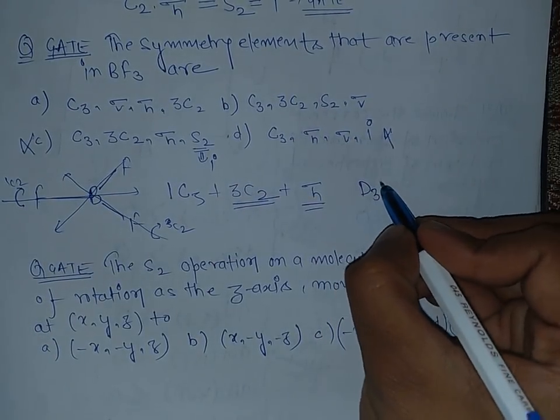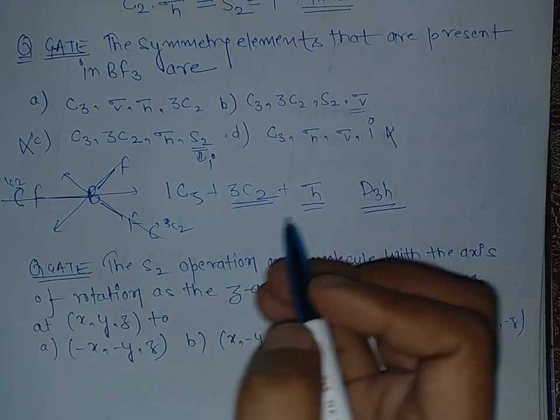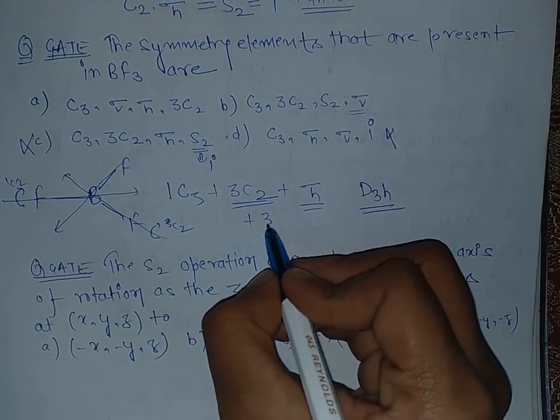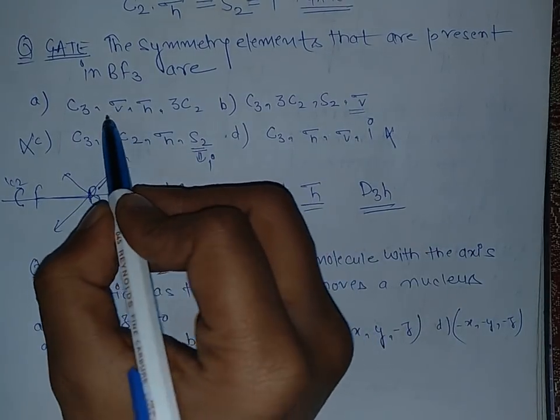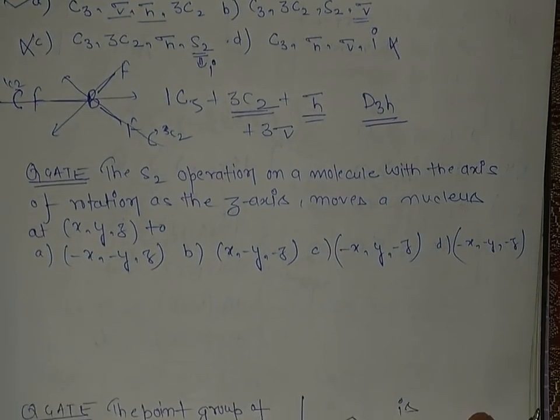Now in option B, because this has a point group of D3h, there is sigma plane - yes, we have three sigma planes also. But in option A there is sigma v as well as sigma h, so A is the right answer.